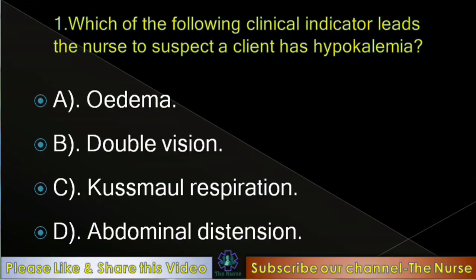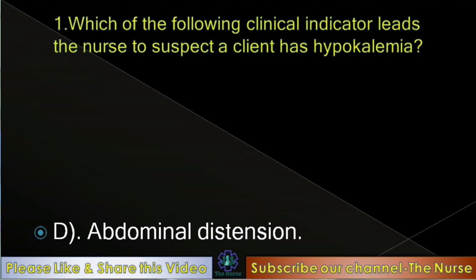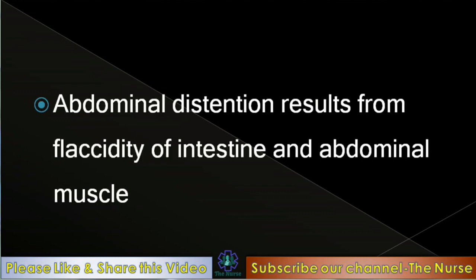First question: Which of the following clinical indicators leads the nurse to suspect a client has hypokalemia? Options: Edema, double vision, cosmoid respiration, abdominal distension. Correct answer: Abdominal distension. Abdominal distension from hypokalemia results from flaccidity of the intestine and abdominal muscle.